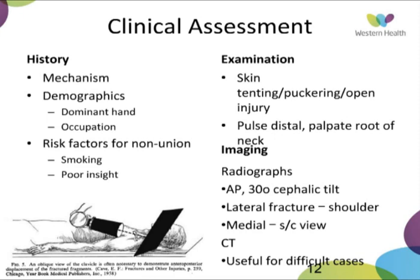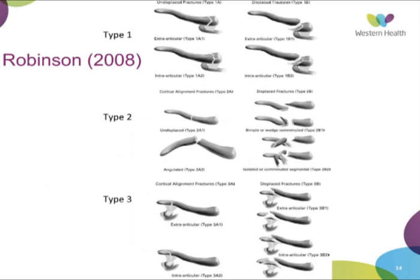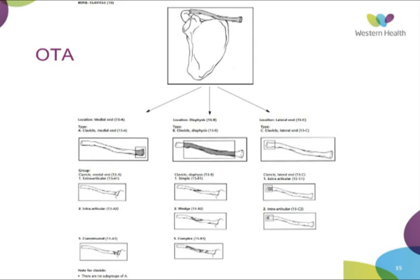In 1967, Allman came out with a classification system which divided clavicle fractures into groups based on equal one-third distribution of the clavicle — middle, lateral, and medial, groups one, two, and three. This has most recently been adapted by Rockwood to include subgroups for group two and group three fractures. Edinburgh's classification details displacement, fracture pattern, and fracture location, which is more useful for research purposes. The Orthopaedic Trauma Association also has their own classification system, similar to the AO system.